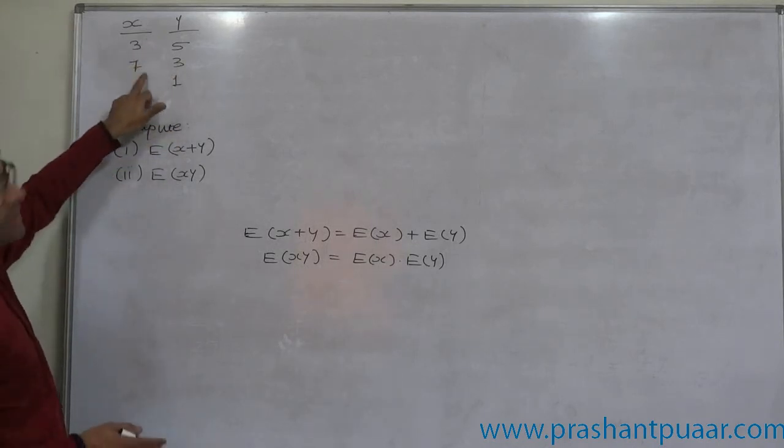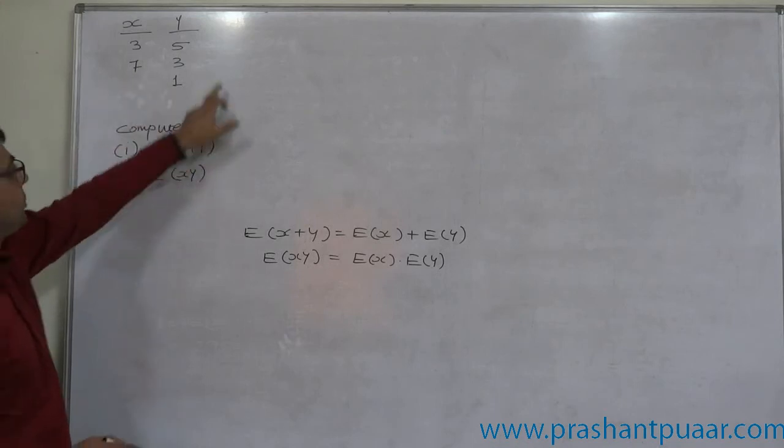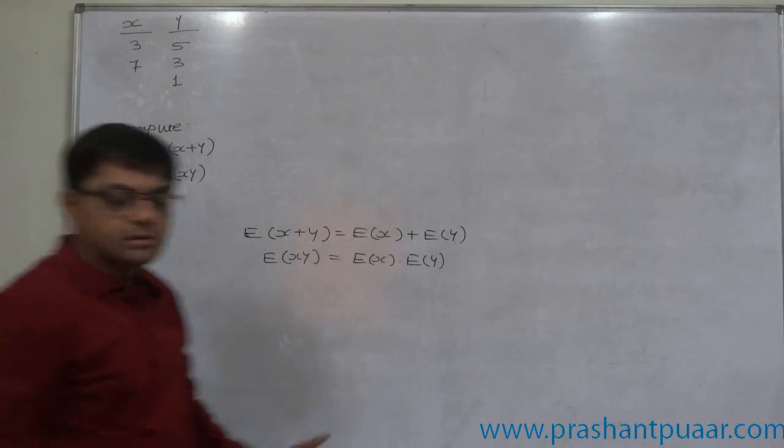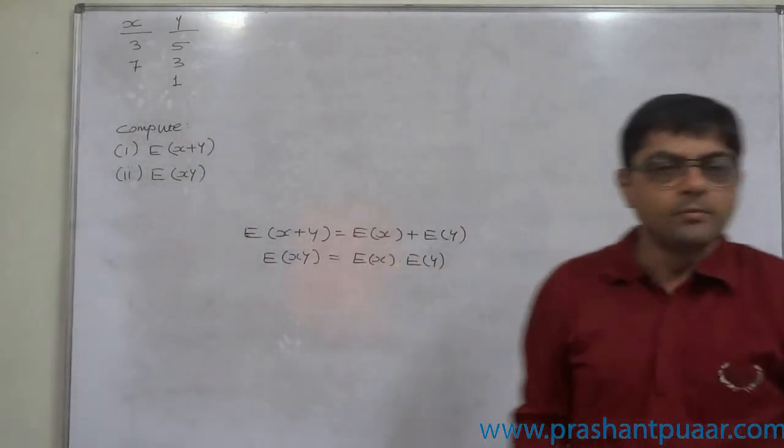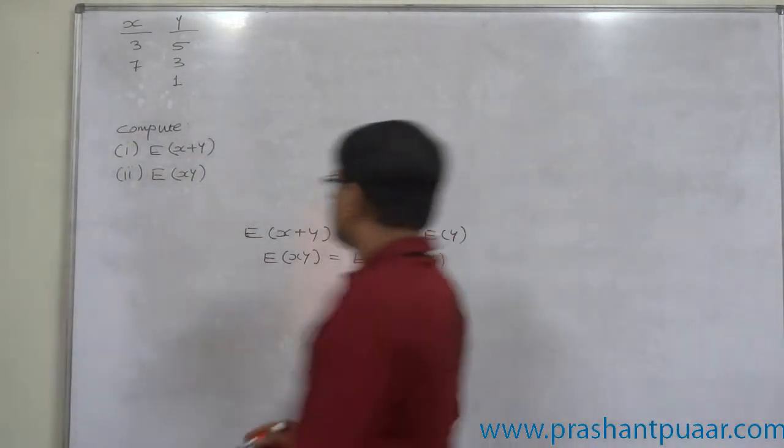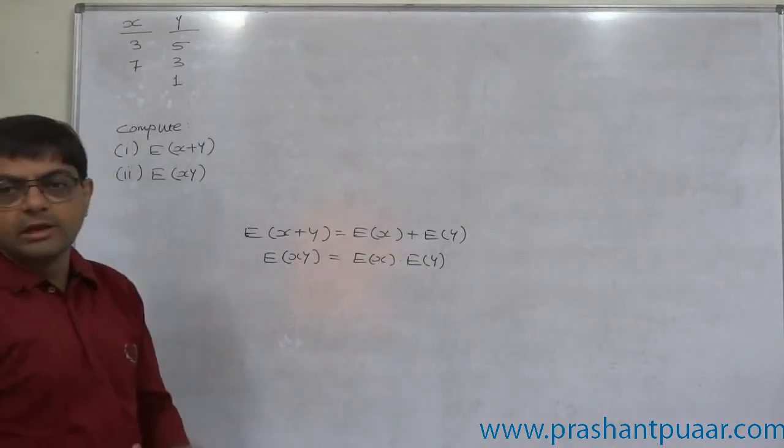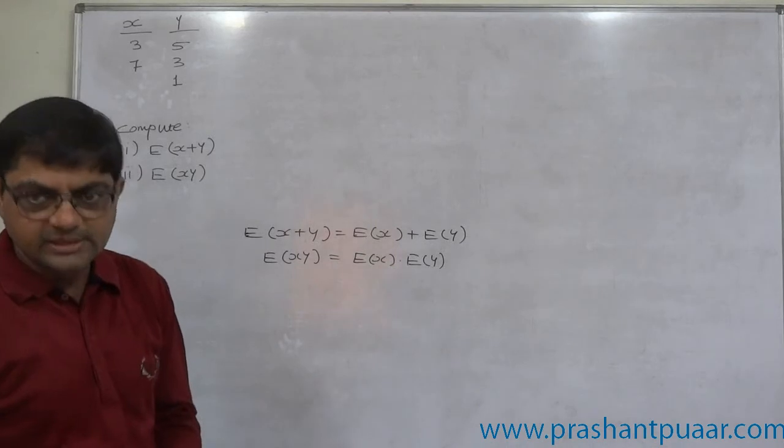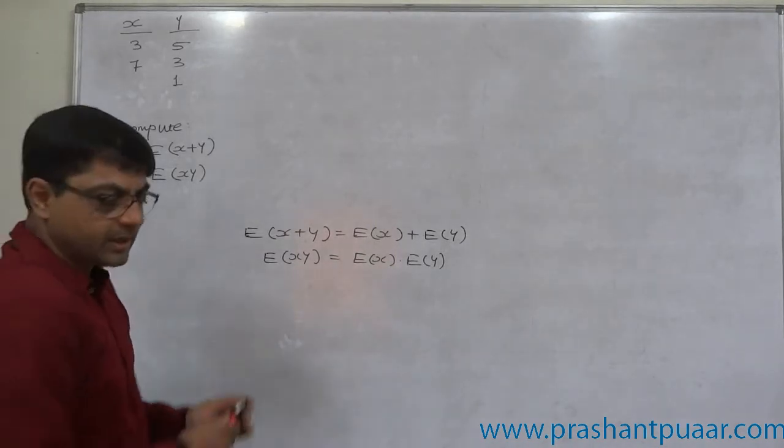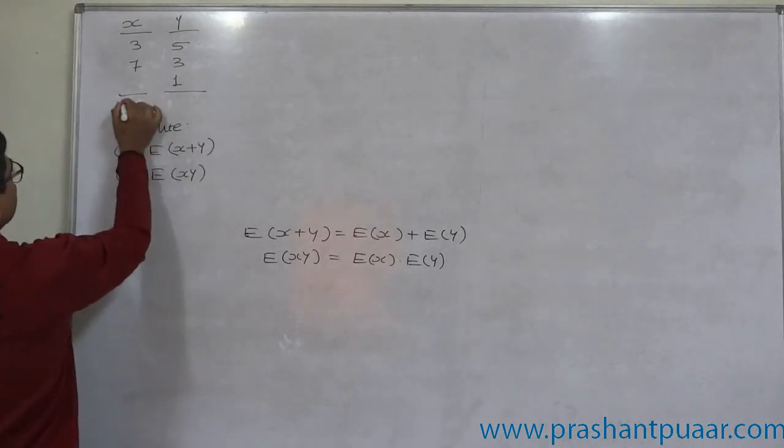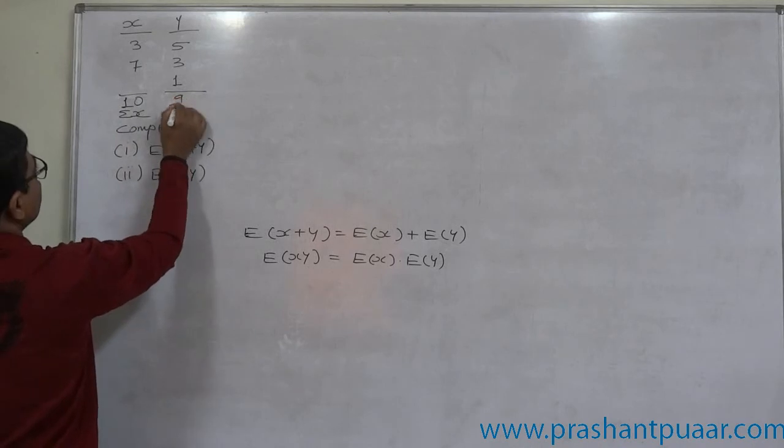Probability of 3 is 1 by 2, 7 is also 1 by 2. Probability of 5 is 1 by 3, 3 is 1 by 3, 1 is 1 by 3. We need not express the probability. To calculate E of x and E of y, we just require to calculate mean, that means x bar and y bar. This is plain case of sigma x upon n and sigma y upon n. Sigma x comes to 10, sigma y comes to 9.